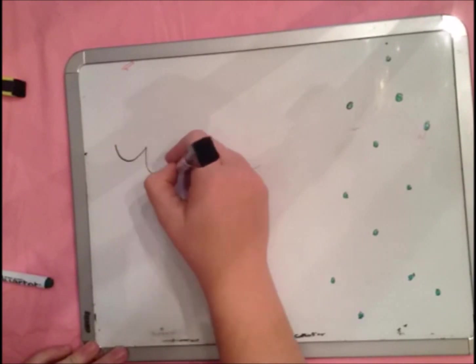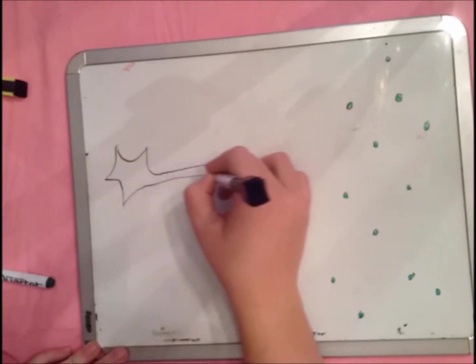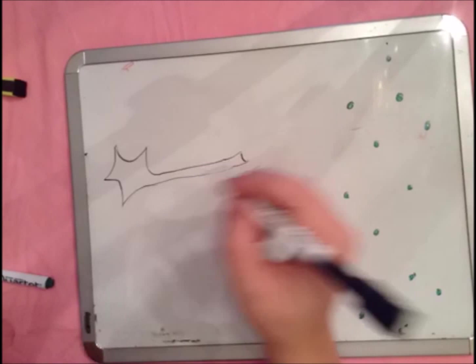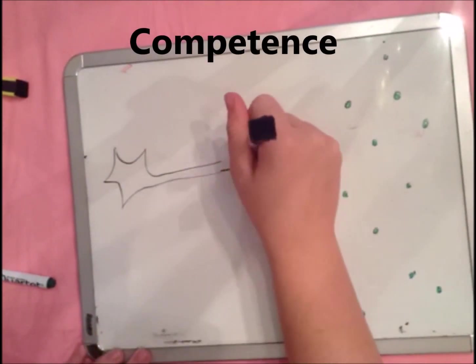One final factor in determining where axons eventually end up is the ability of a growth cone to sense the proteins being secreted by surrounding cells. This is called competence.